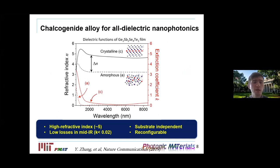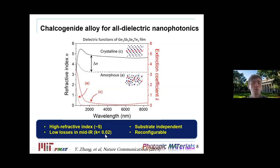The optical properties of GSST — refractive index and extinction coefficient as a function of wavelength from 1 to 9 microns — show a pretty high refractive index of around 4 and quite low losses, especially in the mid-infrared range, reaching down to the order of 0.01–0.1 in both amorphous and crystalline states. Additionally, the material can transition between two states — amorphous and crystalline — producing a high contrast in refractive index of about Δn = 1.5 to 2.